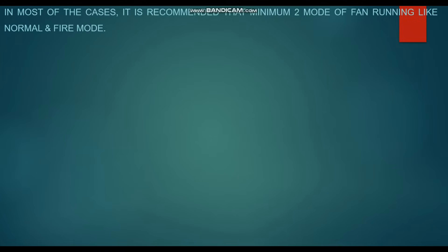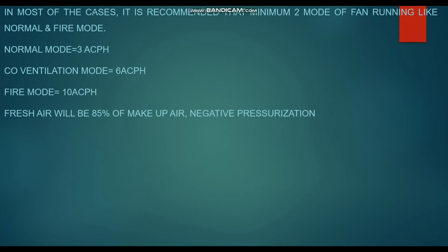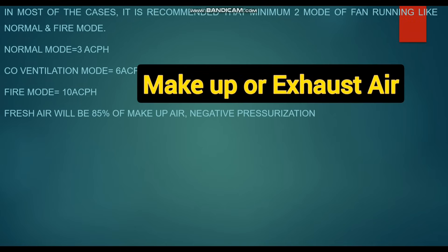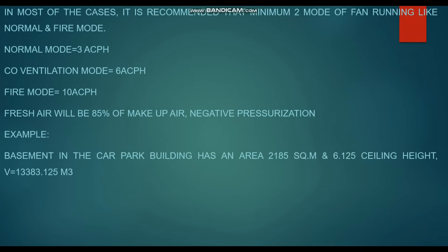In most cases it is recommended to have a minimum of two fan operating modes: normal mode and fire mode. In normal condition the fan runs at normal speed; in fire mode it runs at higher speed. Some civil defense authorities allow three modes: normal mode at 3 air changes per hour (ACH), CO ventilation mode at 6 ACH, and fire mode at 10 ACH. Overall, the fresh air supply is set at 85% of the exhaust to maintain negative pressure in the car park.